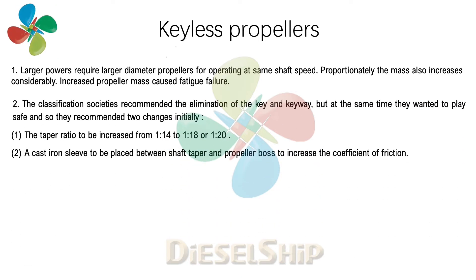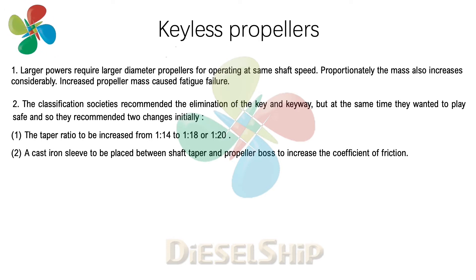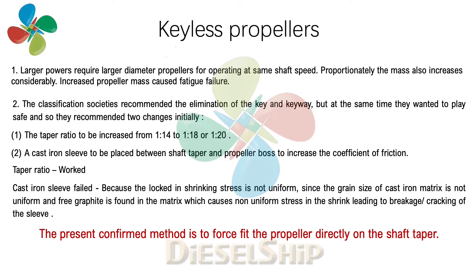The classification societies then recommended the elimination of the key and keyway, but wanted to play it safe. They initially recommended two changes: increasing the taper ratio from 1:14 to 1:18 or 1:20, and placing a cast iron sleeve between the shaft taper and the propeller boss to increase the coefficient of friction. However, the taper ratio change worked, but the cast iron sleeve failed because the locked-in shrinking stress was not uniform — the matrix is not uniform and free graphite found in the matrix caused non-uniform stress, leading to breakage and cracking of the sleeve.